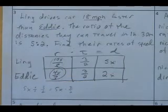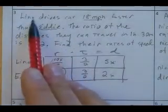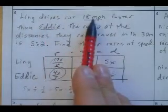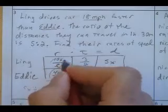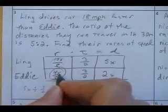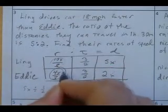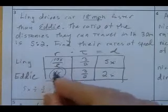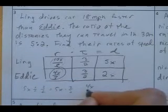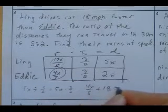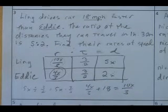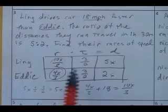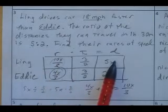And what do we know? It says Ling drives a car 18 miles per hour faster than Eddie. So this is 18 more than this. So if I have Eddie's rate plus 18, won't that be Ling's? So that's what I'll do. Eddie, 4x over 3, plus 18 is gonna equal Ling's. 10x over 3. Multiply both sides by 3. The LCD, solve for x, you found x.